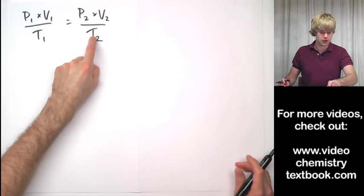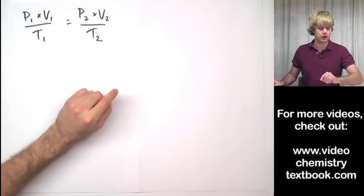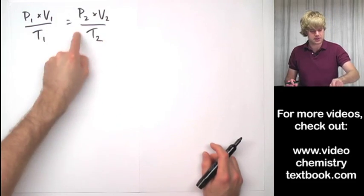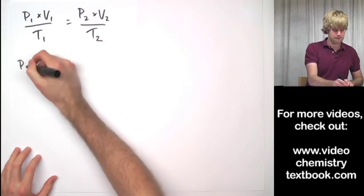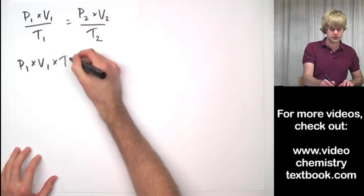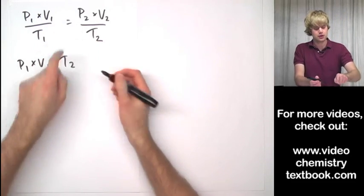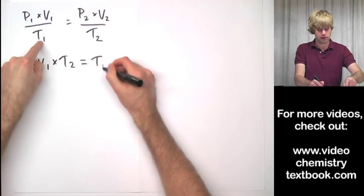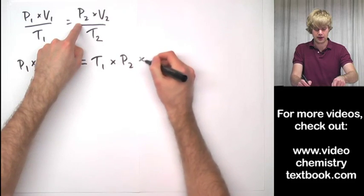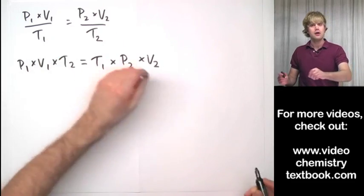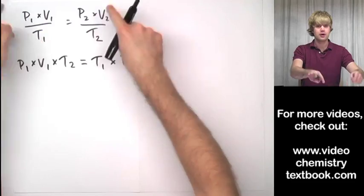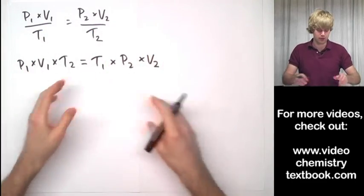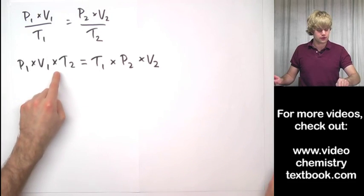So solving for T2, here's what we do for the shortcut: we cross multiply, which means P1 times V1 times T2 equals T1 times P2 times V2. Now this is good because right away it gets T1 and T2 out of the denominator, out of the bottom of the fraction. So we don't have to worry about that anymore. Now everything is on top.